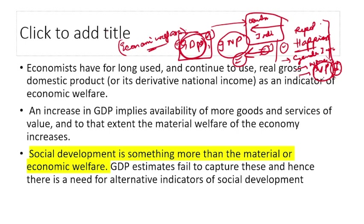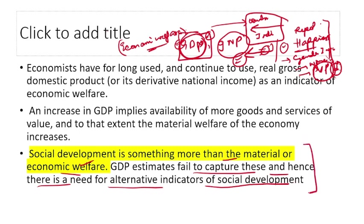But economic development alone does not tell us enough about our country. We need to focus on social development. Just economic growth tells you how much you are developing economically, but for social development you need different indicators — indicators that tell us globally and country-wise where your country ranks. GDP estimates fail to capture social dimensions, hence there is a need for alternative indicators of social development.